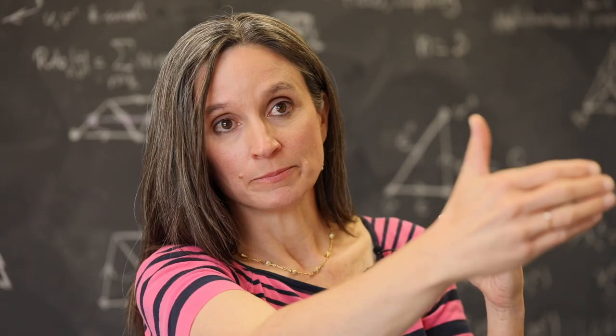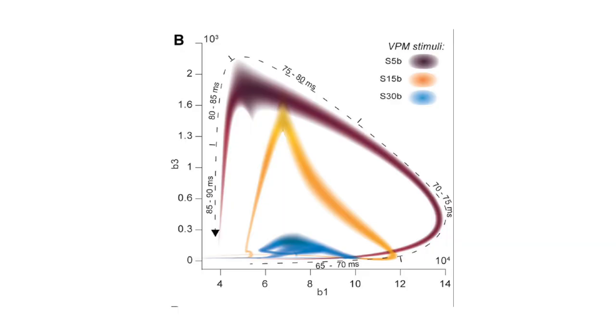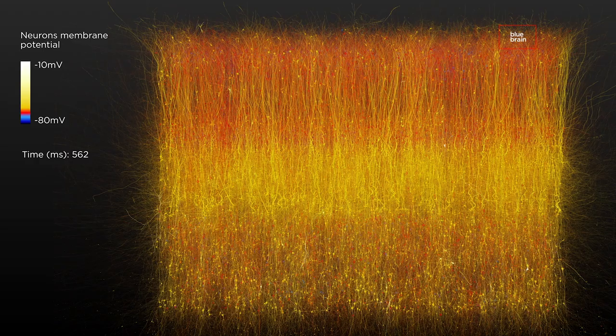When one looks at the evolution of such a pattern through time, it gives us a mathematical signature that describes this pattern that was hidden in the seemingly chaotic firing of the network.